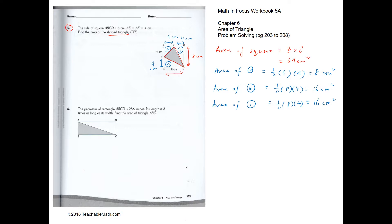The area of the shaded triangle equals the whole square — 64 — subtract the unshaded regions: 8, 16, and 16. That gives an answer of 24 cm squared.